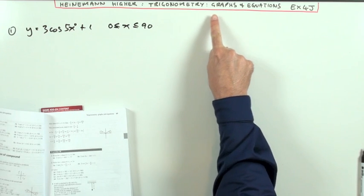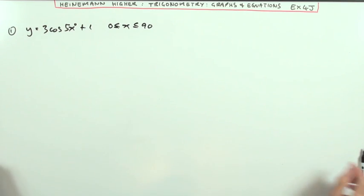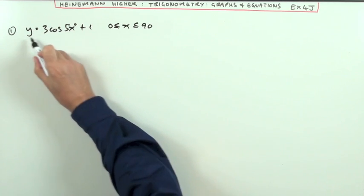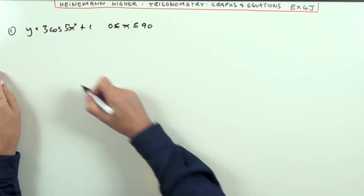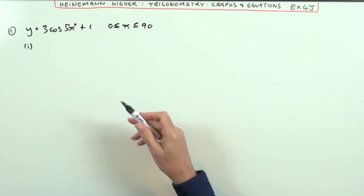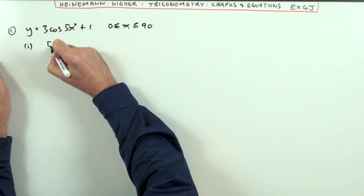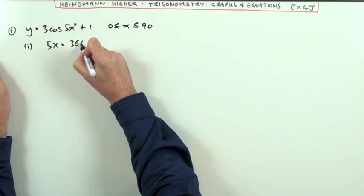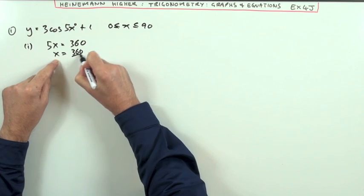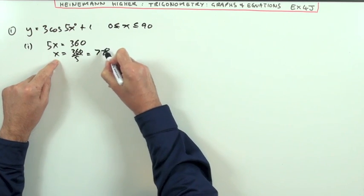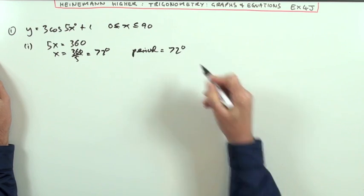We're working on the chapter on trigonometry graphs and equations, mixed exercise 4J, number one. For this function, state its period, amplitude, and sketch the graph. For the period, it should take 360 degrees to finish normally, so if that end position was 360 degrees, the new position is 360 divided by 5, which is 72 degrees. So the period is 72 degrees.